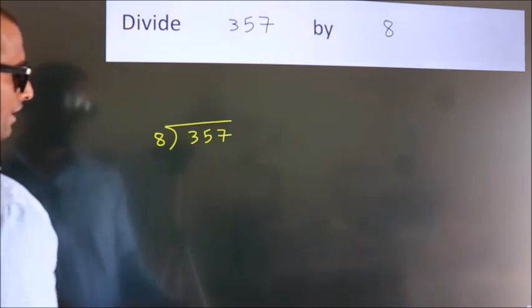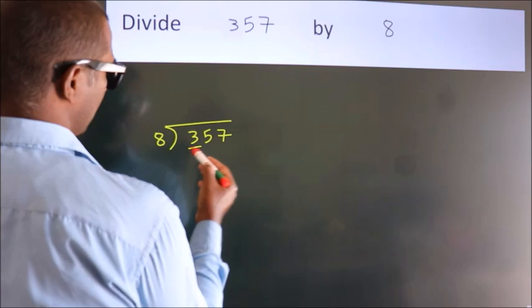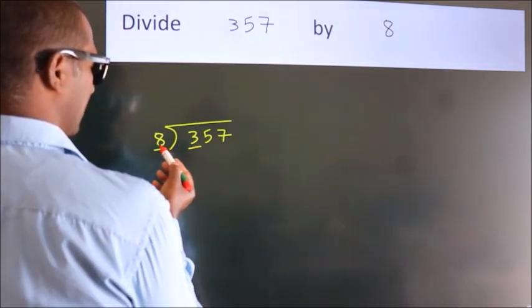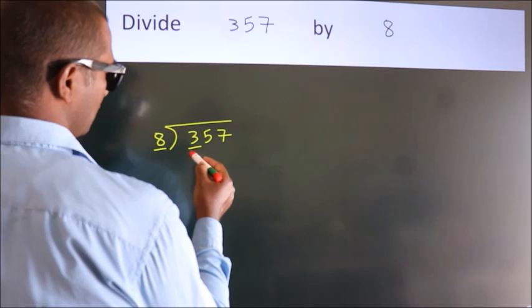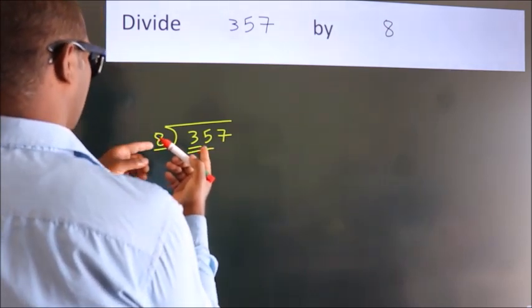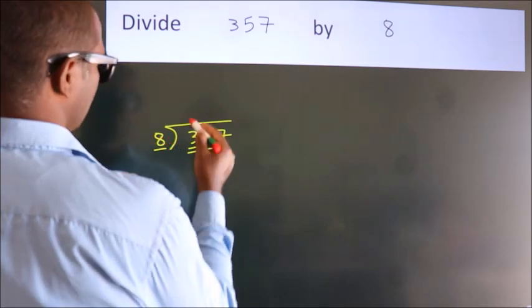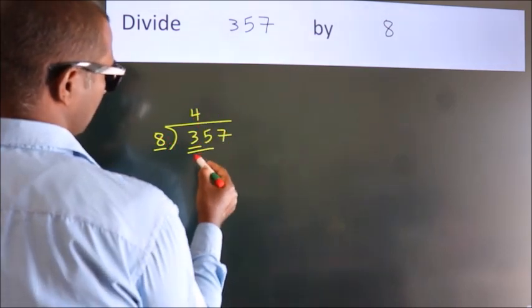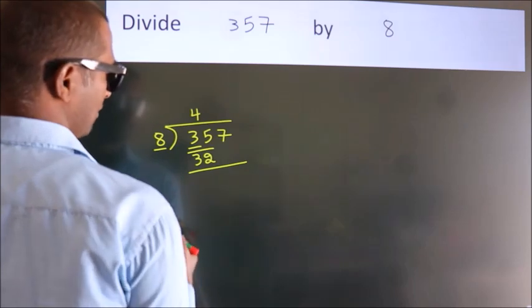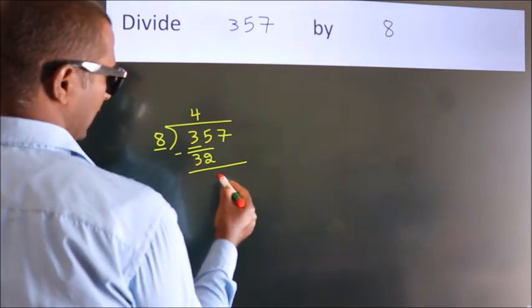Next, here we have 3, here 8. 3 is smaller than 8, so we should take 2 numbers: 35. A number close to 35 in the 8 table is 8 fours, 32. Now we should subtract. We get 3.